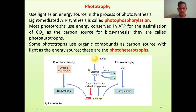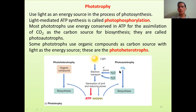Looking at this electron transport picture: electron donors such as H2O or H2S donate electrons through the electron transport chain. This generates proton motive force and reducing power. The proton motive force leads to ATP production, and reducing power leads to the generation of NADPH or NADH. These ATP molecules can be used for reduction of CO2 for biosynthesis in photoautotrophs, or for synthesis from organic compounds in photoheterotrophs.